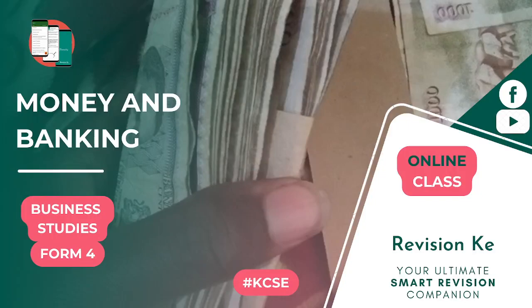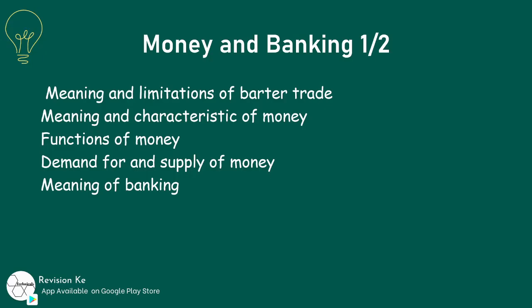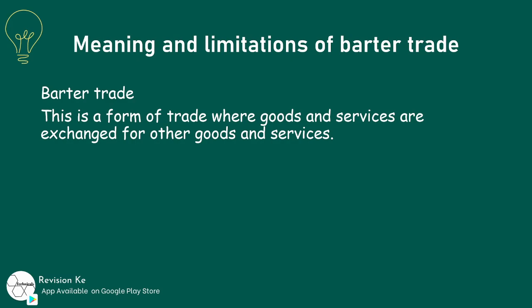Money and banking is our next topic. Under this topic we need to explain the meaning and limitations of barter trade. Barter trade is a form of trade where goods and services are exchanged for other goods and services. How did this benefit the traders?